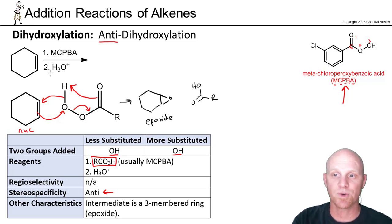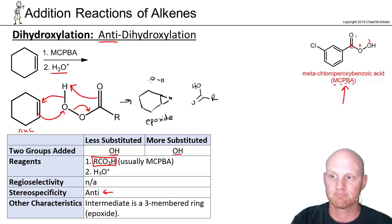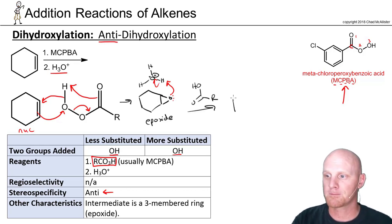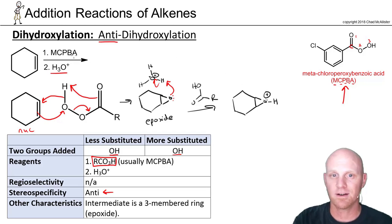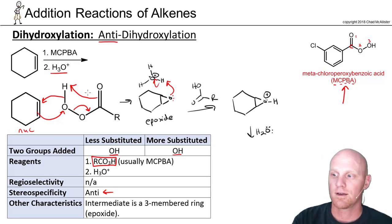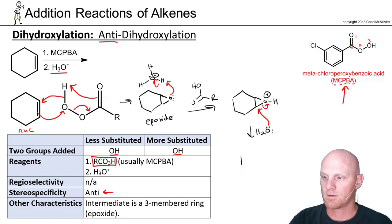It's this epoxide that we're now going to react with H3O+ in step two. The first thing we do with H3O+ is a proton transfer reaction — we protonate that epoxide. Then a water molecule comes and does backside attack. Any time you attack a three-membered ring, you attack from the backside. In this case it doesn't matter which side, since they're equally substituted, but if there were a more substituted side, that's the side we'd attack. We open it up, and now we have an OH on that side from the epoxide oxygen.